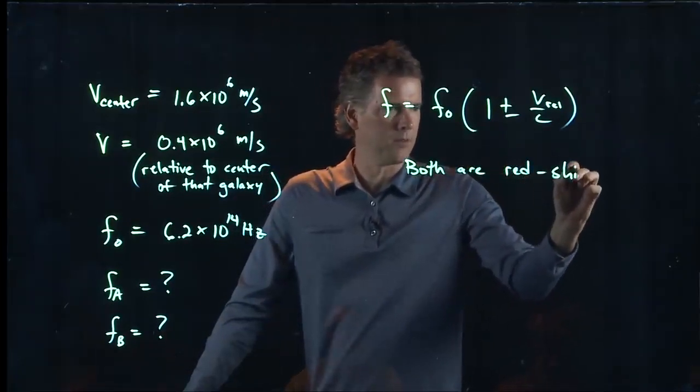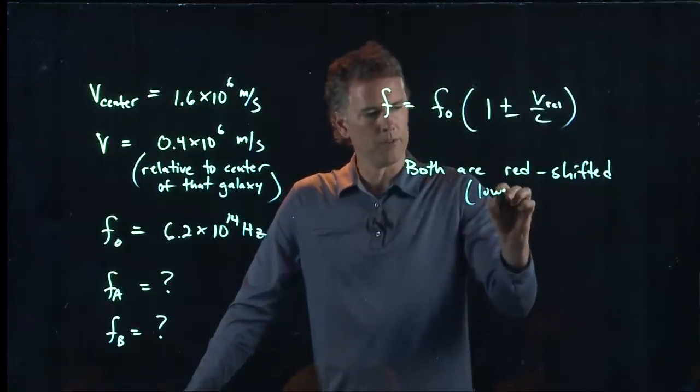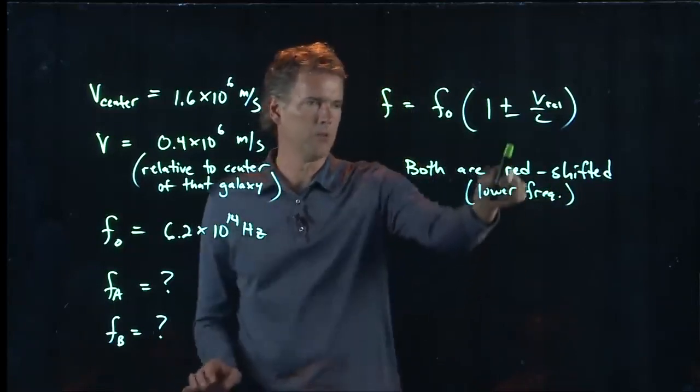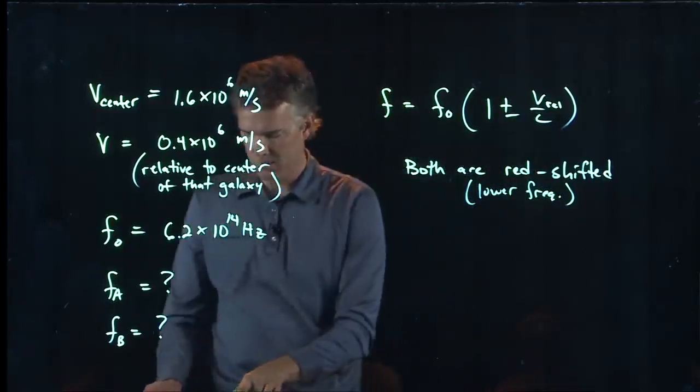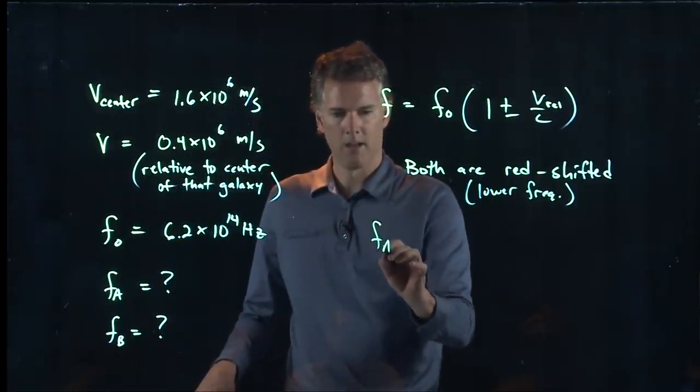Okay, and it's moving away from us faster than it's spinning. And so both of these are going to be redshift. Both signals are in fact redshifted, which means lower frequency. And so we want to use the minus sign in our equation.